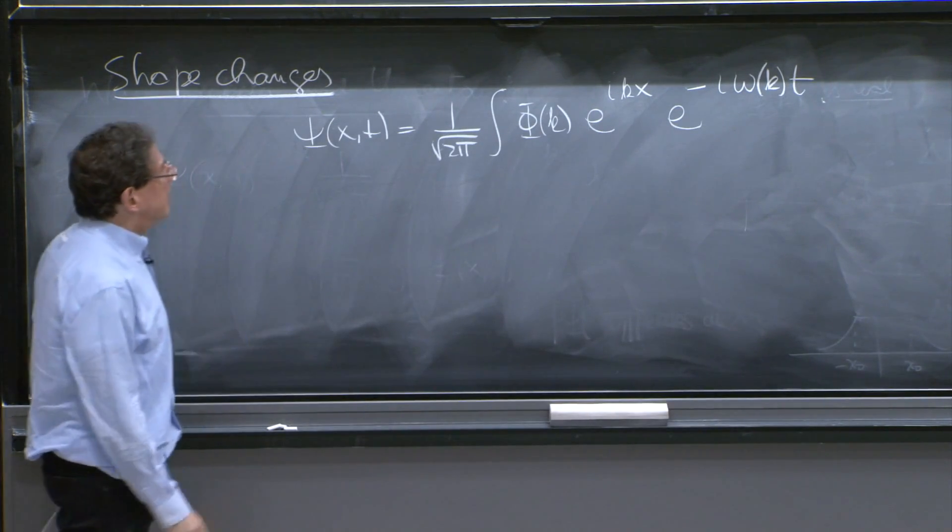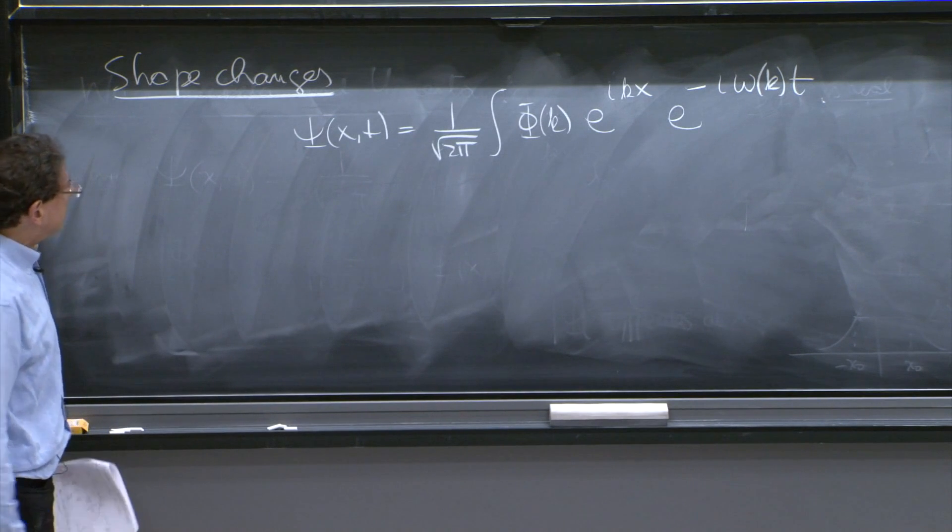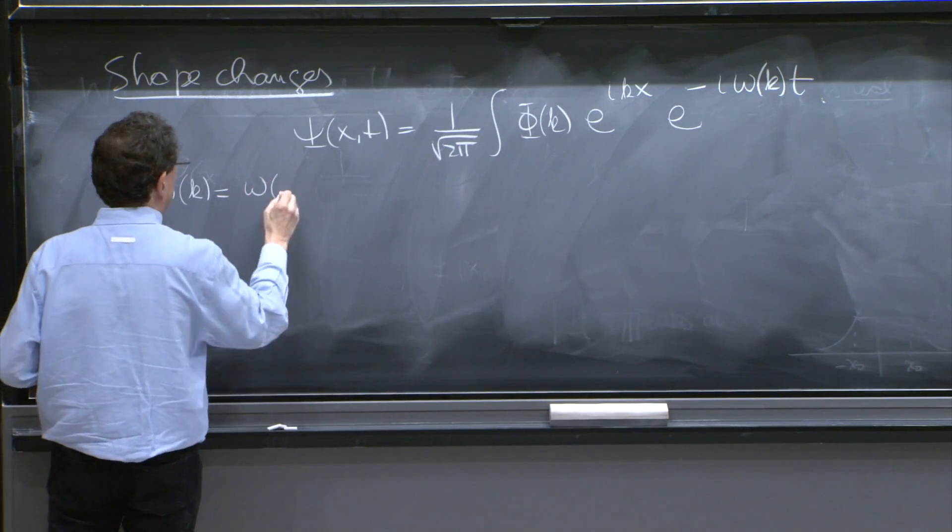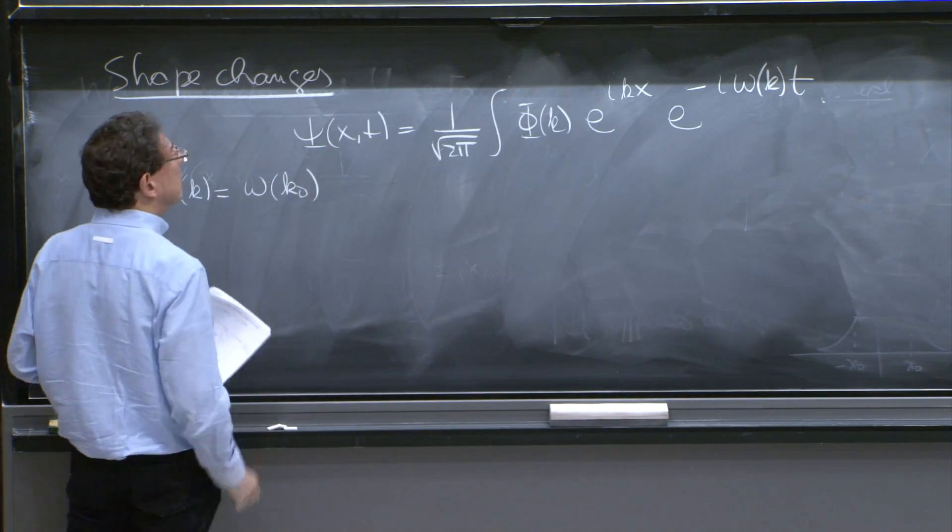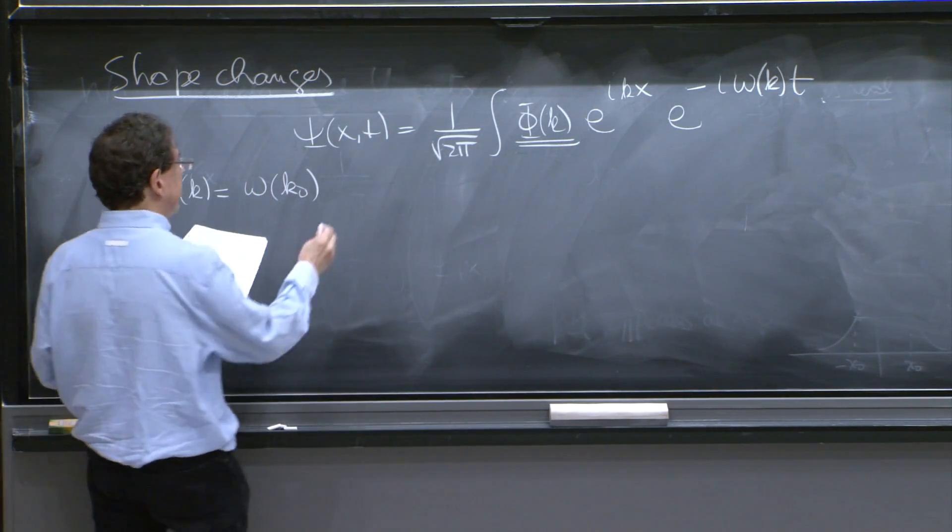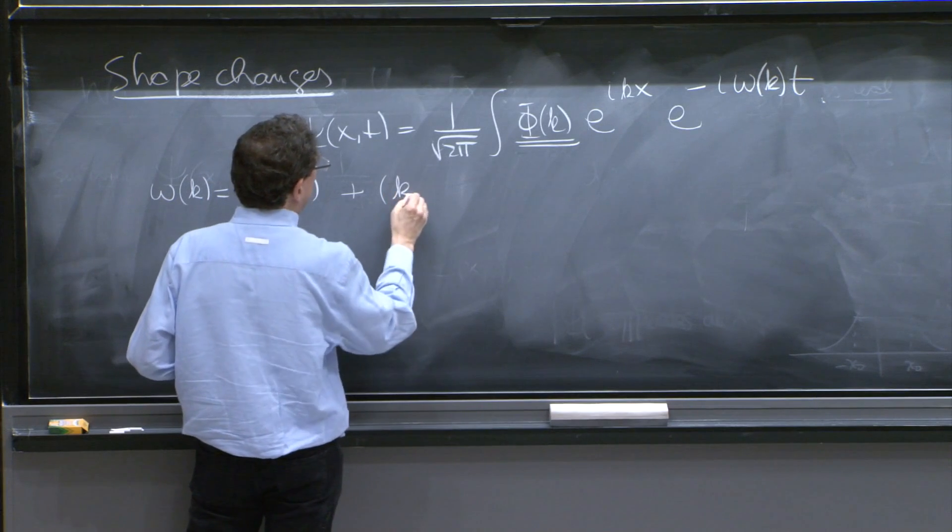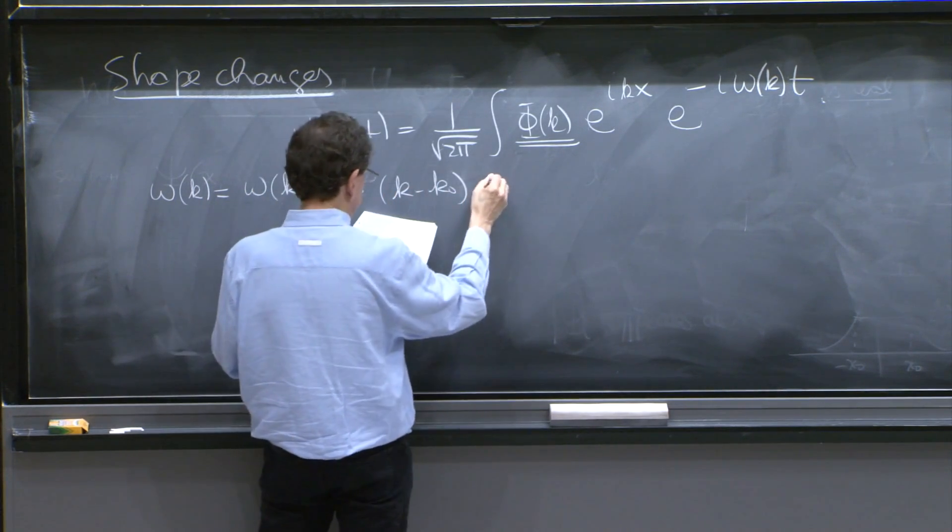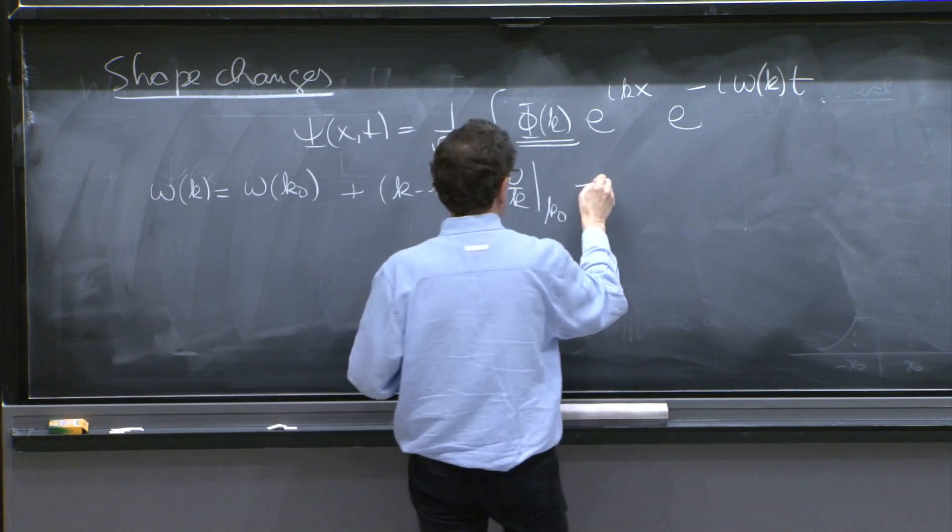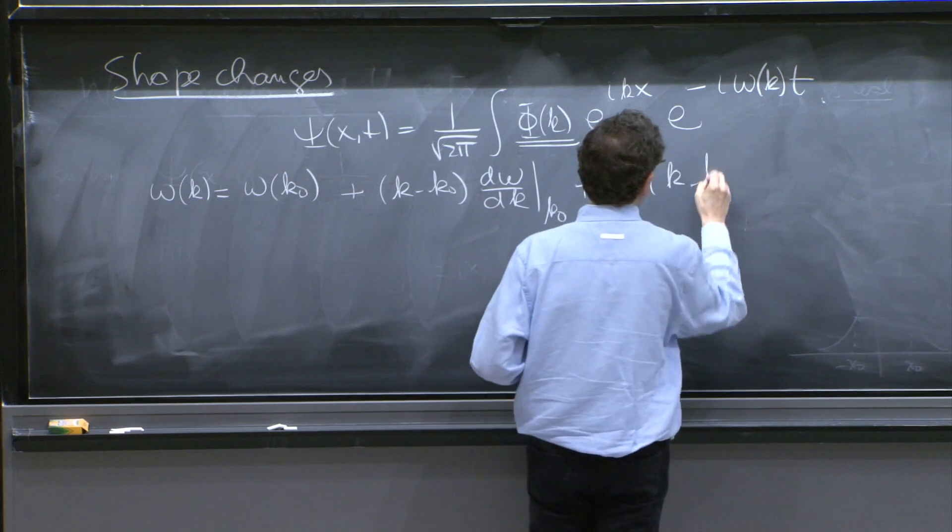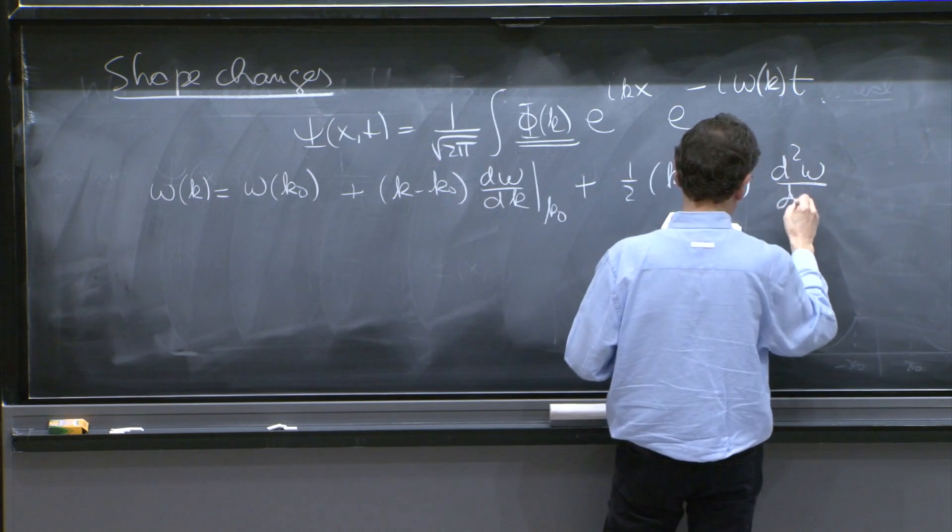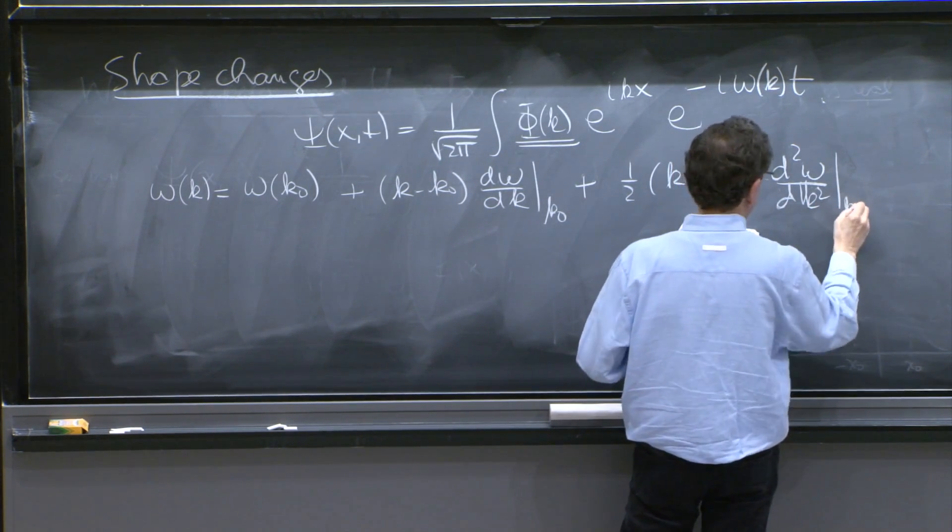What did we do with this to analyze how it propagates? We expanded omega of k as omega of k naught, which again, this quantity is centered and peaks around k naught, plus k minus k naught times d omega dk at k naught plus 1 half k minus k naught squared d second omega dk squared at k naught.